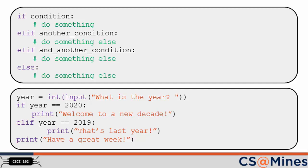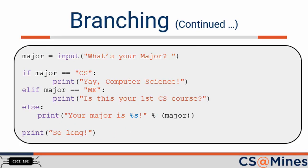We encourage you to read through the if and elif example on this slide, and again, don't forget the colon. This slide provides another if example where both an elif and else condition are used. Think about what happens if the user enters CS — in that case, 'yay, computer science' will be printed. If the user enters ME, the initial if condition evaluates to false and the elif evaluates to true, so 'is this your first CS course' will be printed. If the user enters EE, 'your major is EE' will be printed. Finally, 'so long' will be printed at every execution of the code. If not, please come to office hours.